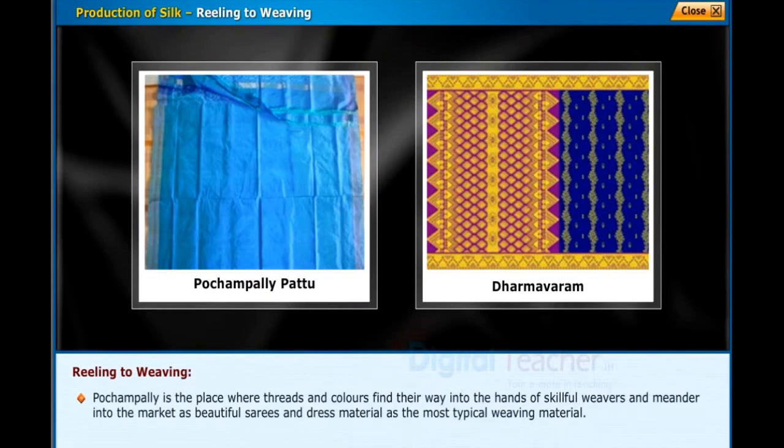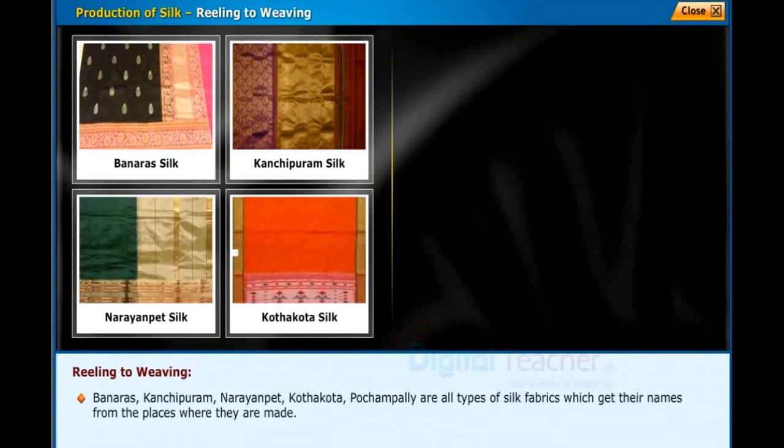Pochampalli is the place where threads and colors find their way into the hands of skillful weavers and emerge into the market as beautiful saris and dress material. As the most typical weaving hub, Pochampalli is also known as the silk city of India. Banaras, Kanchipuram, Narayanpet, Kottakota, and Pochampalli are all types of silk fabrics that get their names from the places where they are made.